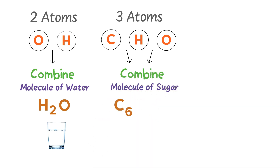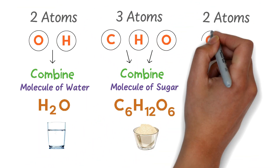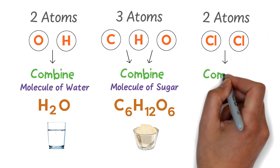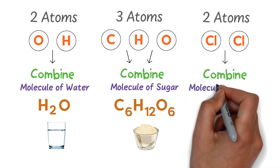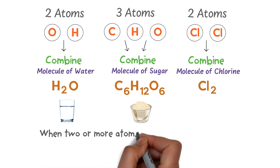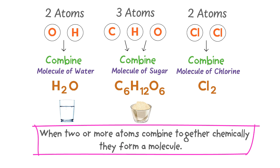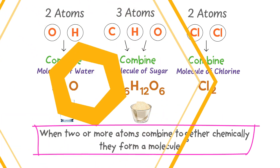Consider three atoms — carbon, hydrogen, and oxygen — if I combine these three atoms I get a molecule of sugar, C6H12O6. Consider two atoms of chlorine; if I combine them I get a molecule of chlorine gas, Cl2. Therefore, we define a molecule as: when two or more atoms combine together chemically, they form a molecule.